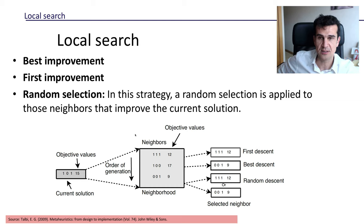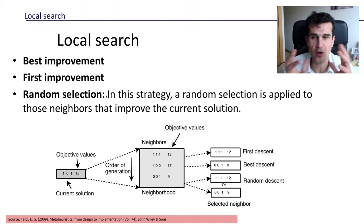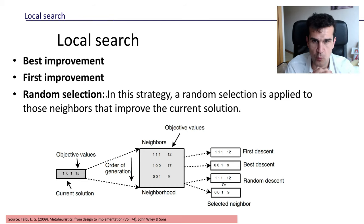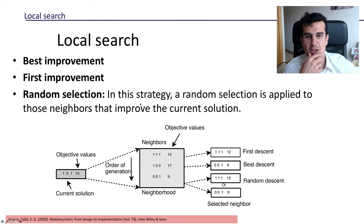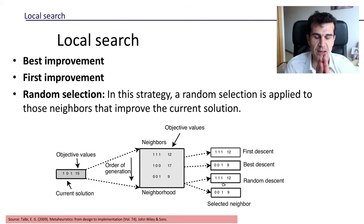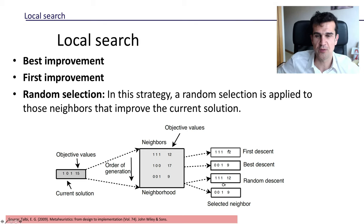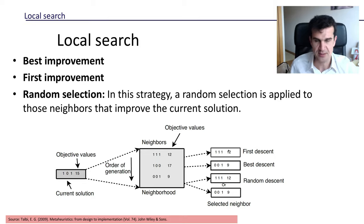A final option sometimes used is called random local search selection. Here we introduce randomness: we look at the whole neighborhood, collect all neighbors that are strictly better than the current solution, and then choose one of them at random. This means best improvement, first improvement, and random selection can each potentially give a different solution from the same starting point. With that we finish this video — see you in the next one!